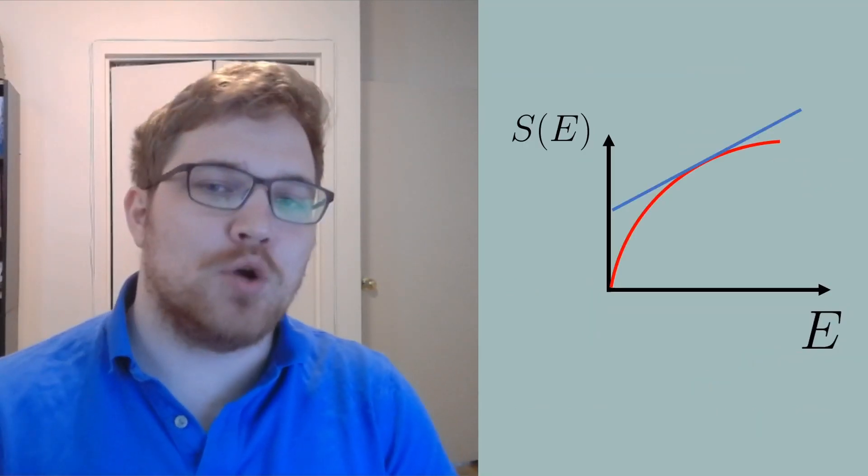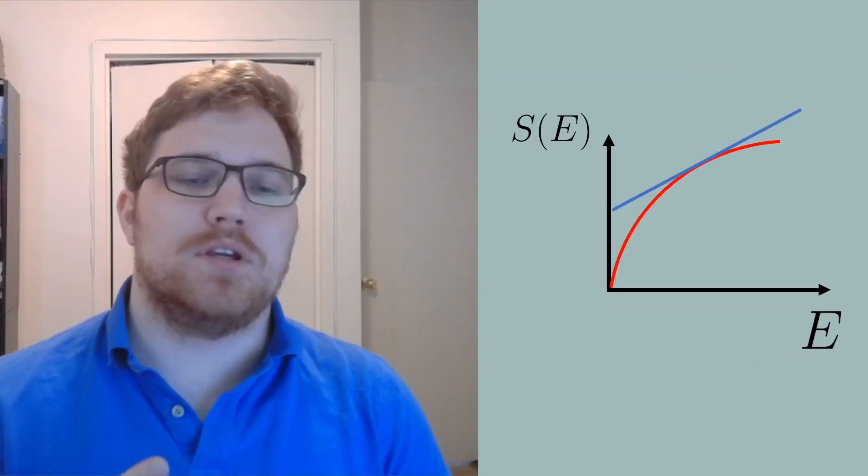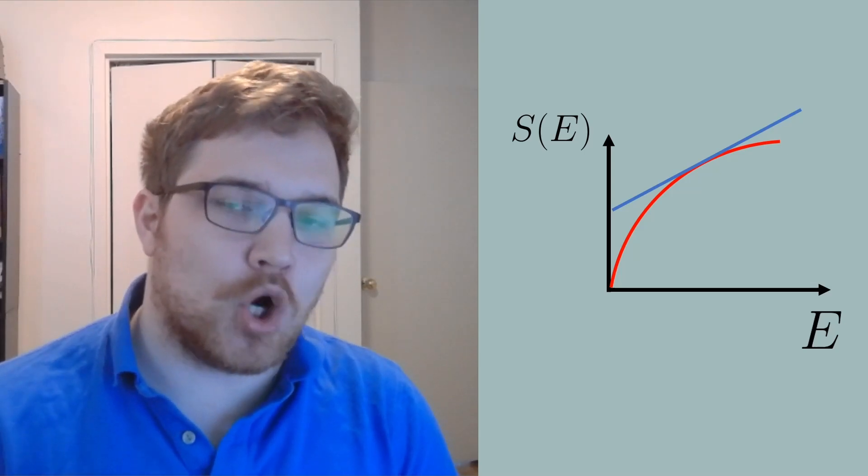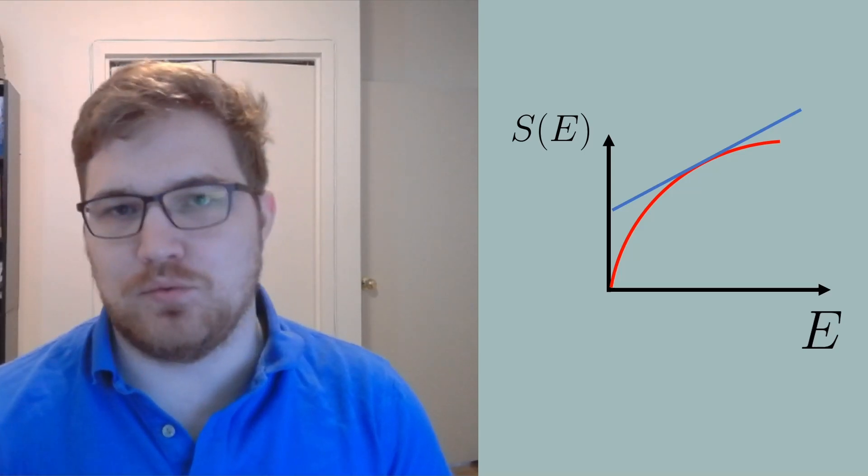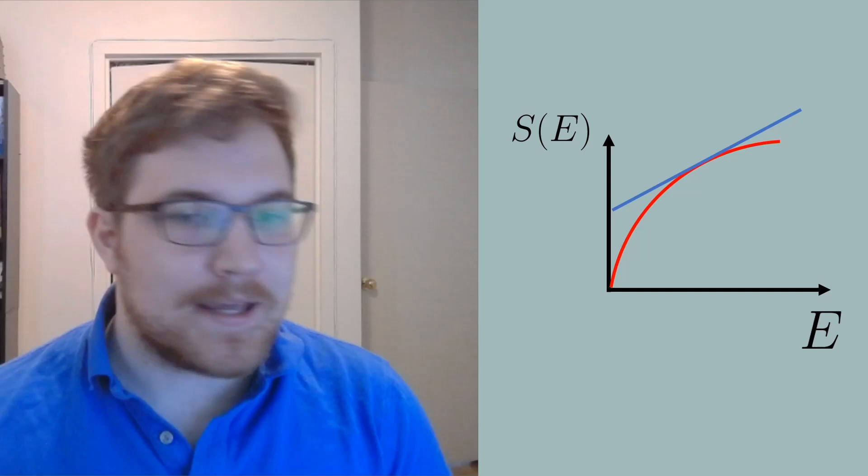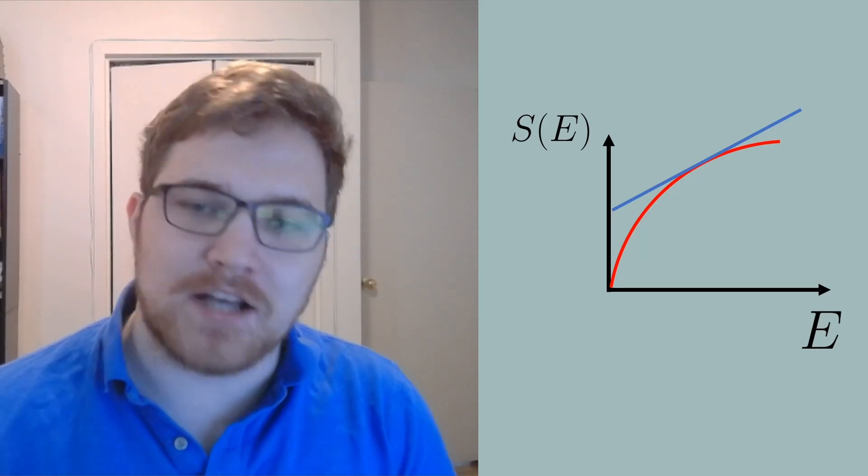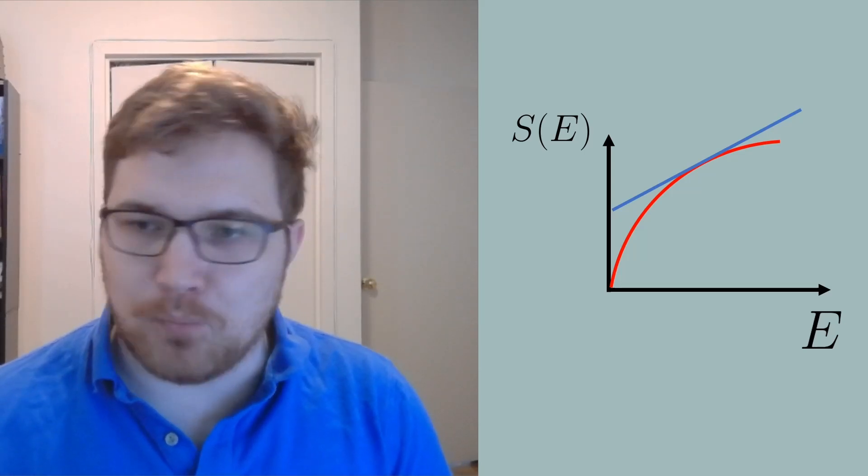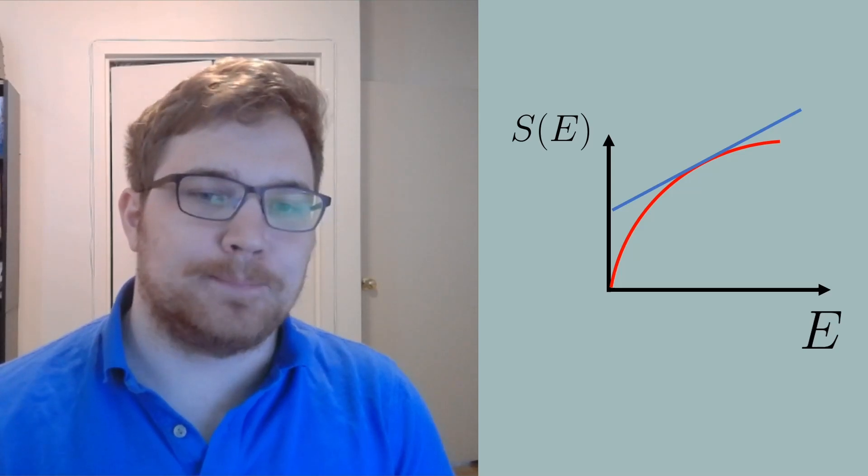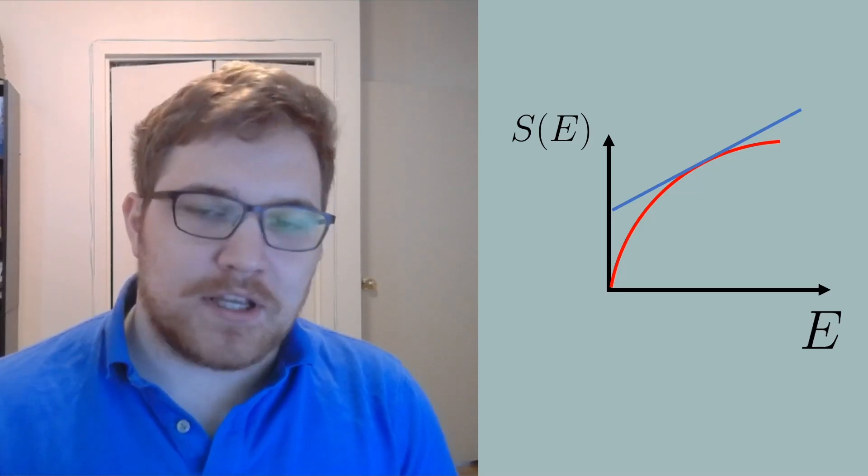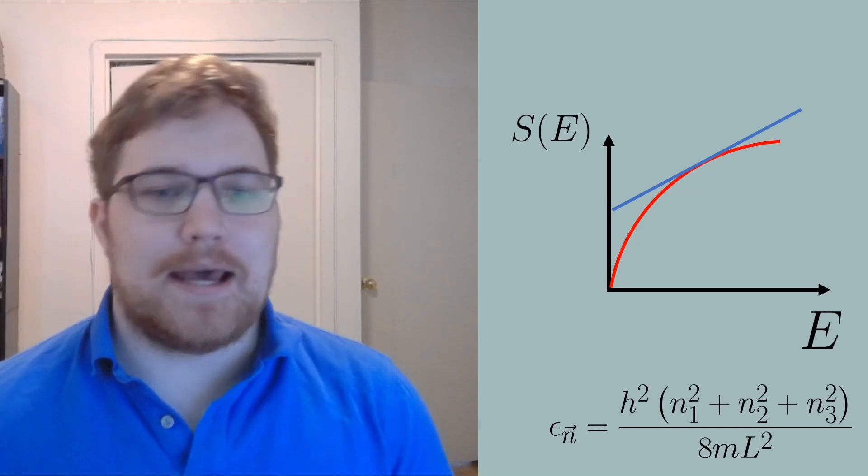In the last video we spoke about two situations for the entropy. One being that the entropy would always increase with respect to increases in energy. This is intuitive. The more energy we have to distribute amongst particles, the more ways we can usually distribute it. An easy example to think of would be that of the ideal gas.